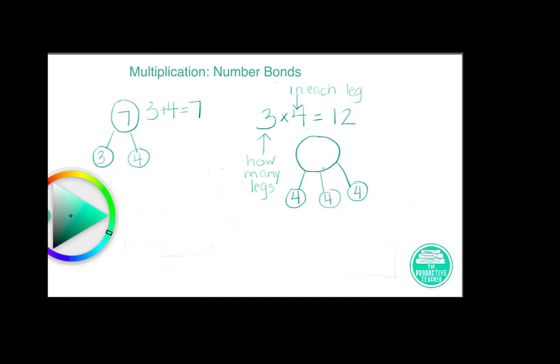And then my product is going to be the top or the main circle of my number bond. So this is how you can use number bonds to model multiplication equations. When we multiply, we always make sure that our first factor shows the number of groups or on a number bond, the number of legs. And our second number shows the number in each leg. Our product will be the top of our number bond.